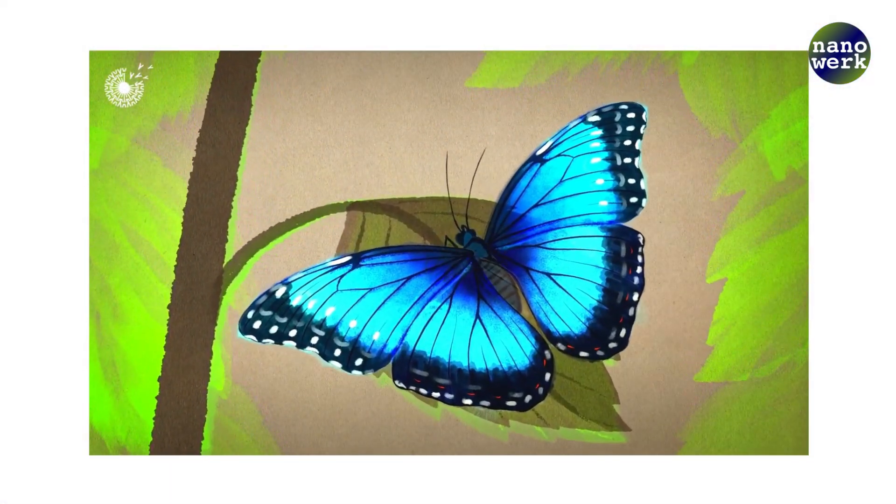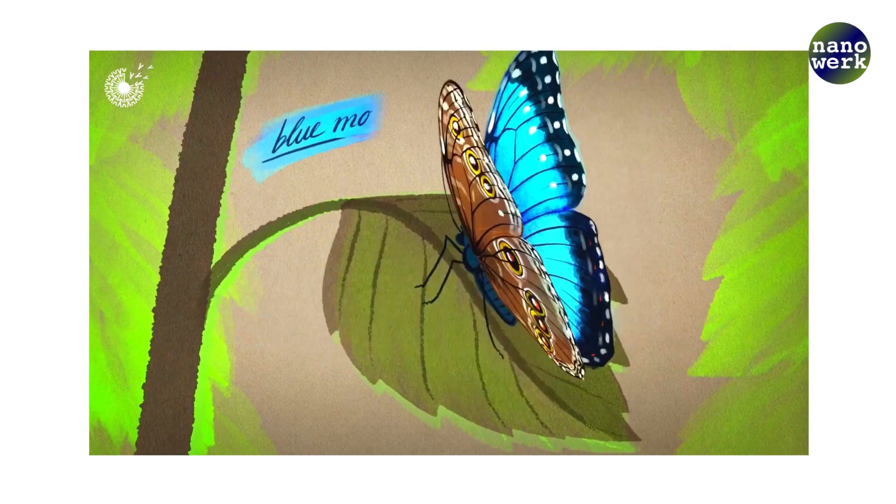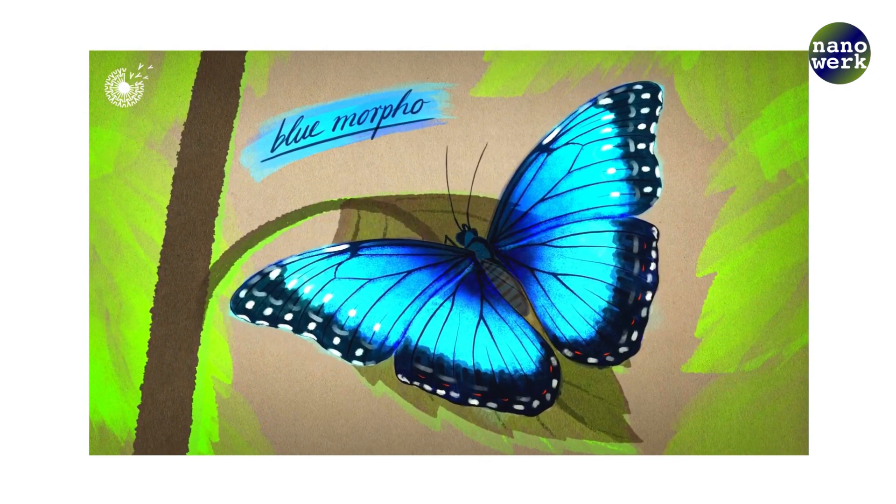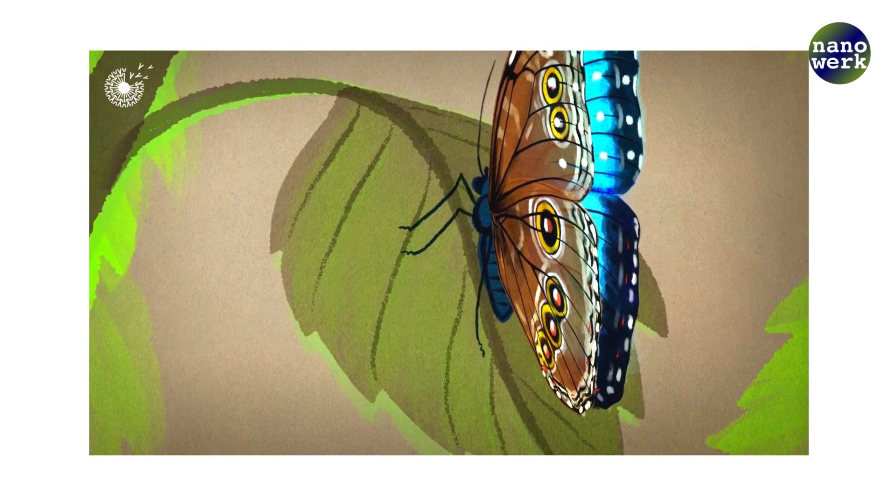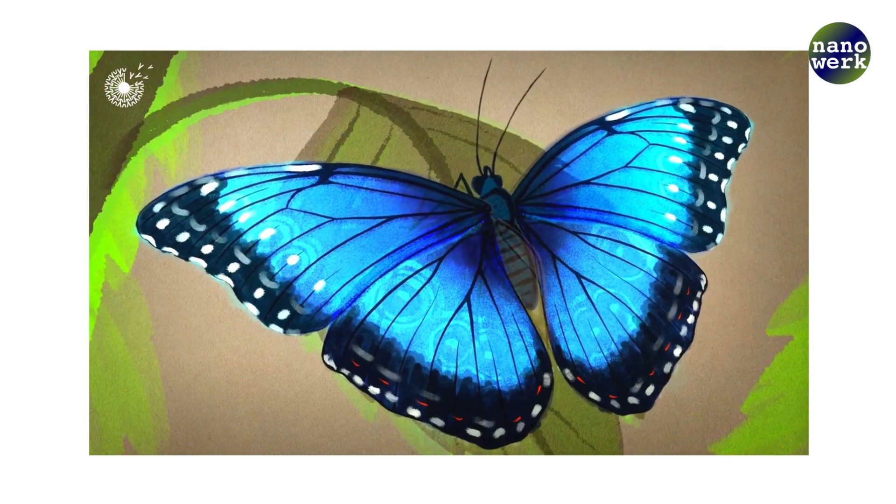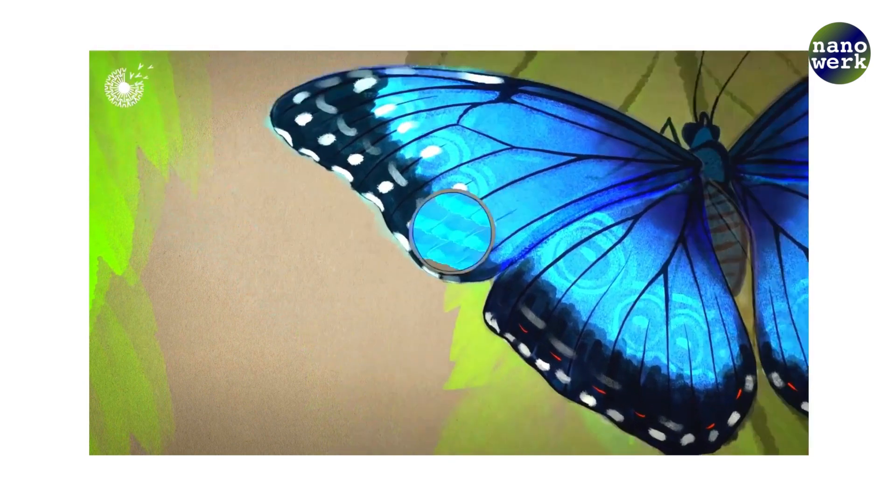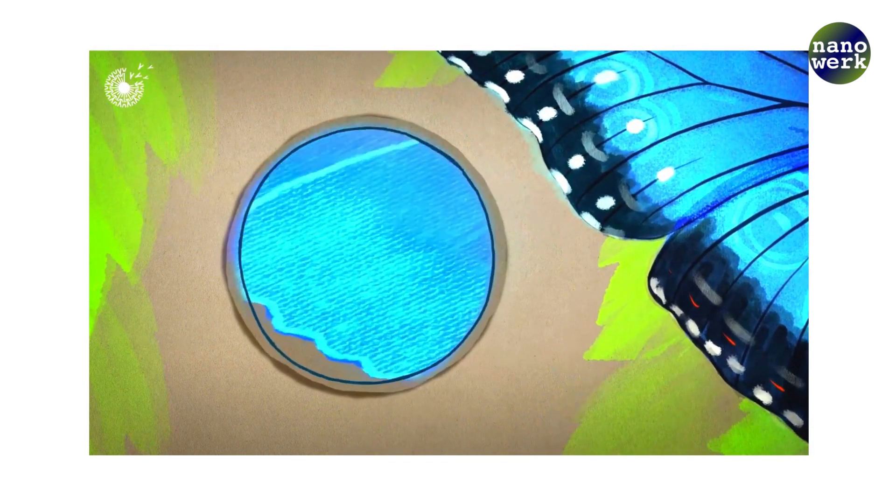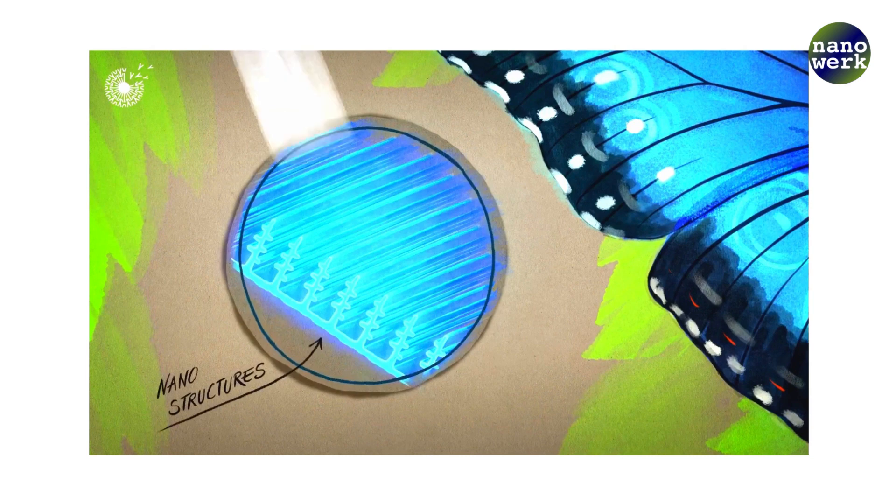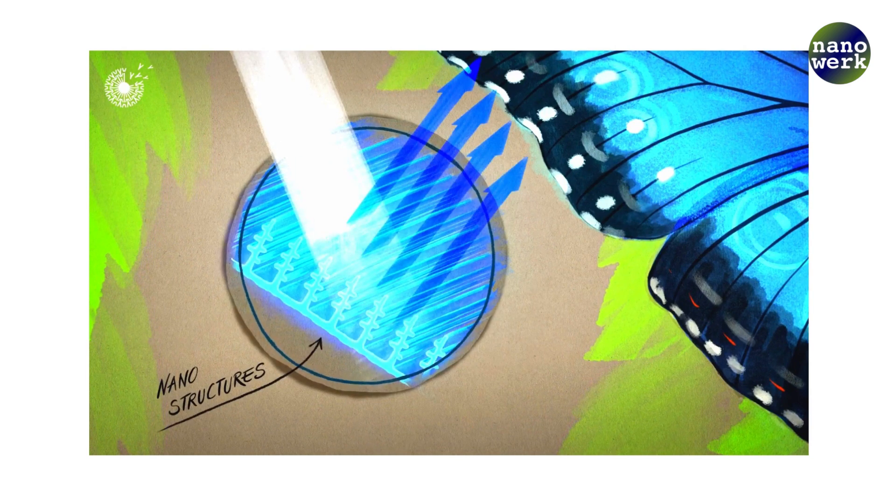These beautiful, vivid blue wings belong to the blue morpho butterfly. But take a closer look and you'll see that they're actually translucent. There's no blue pigmentation involved. Instead, the wing has millions of stacked nanostructures which reflect blue light and allow other wavelengths of light to pass through. This phenomenon is called structural color.